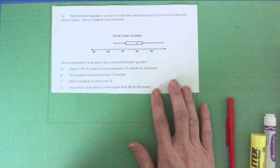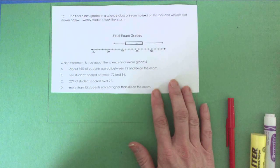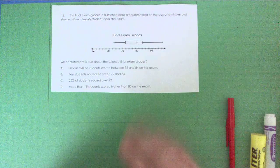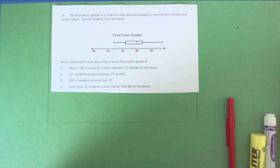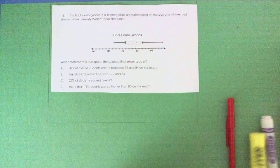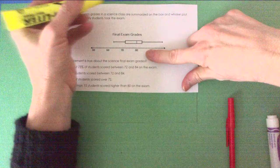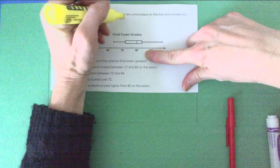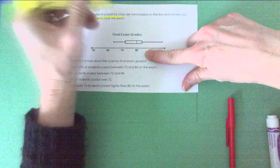So here we are with another box and whisker plot. It says the final exam grades in a science class are summarized on the box and whisker plot shown below. 20 students took the exam. Let's highlight that - 20 students took the exam.